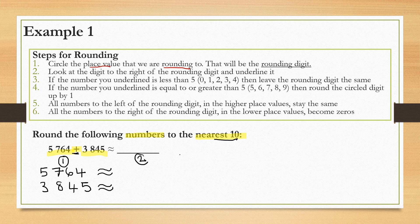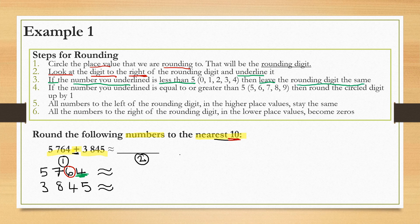The second step will be to round. We need to circle the place value we are rounding to — we are rounding to the nearest 10. The 6 is in the 10 place value. Next, we need to look at the digit to the right of the rounding digit. That means we are looking at the 4, and we have underlined it. If the number that we underlined is less than 5 — and as we can see, 4 is less than 5 — leave the rounding digit the same. So we leave the circled digit, the 6, the same.